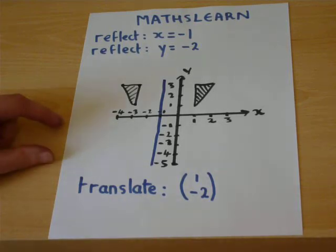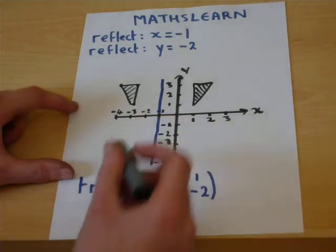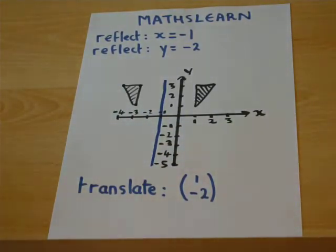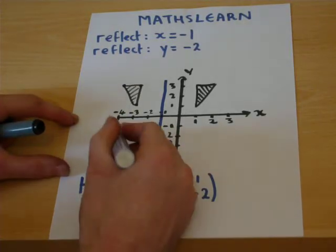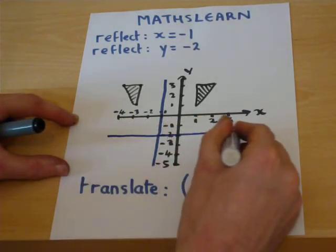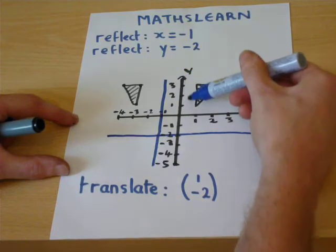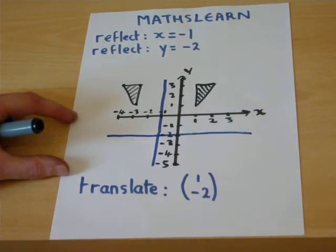Now if instead y was equal to minus 2, I'll show you what happens in this particular case. We could draw across the mirror line when y equals minus 2.